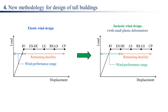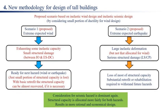The proposed scenario is based on inelastic wind design combined with inelastic seismic design, allocating a small portion of ductility for wind design. Proposed Scenario 1: extreme expected wind exhausts some inelastic capacity, causing small structural damage — between IO and ESDC. The building is ready for the next hazard with just a small portion of structural capacity lost, and with basic retrofit the structural capacity can be almost recovered if necessary.